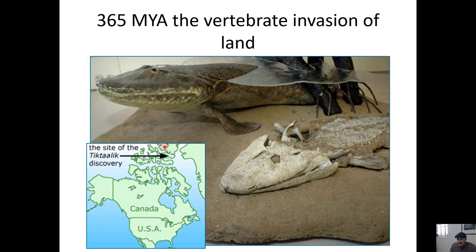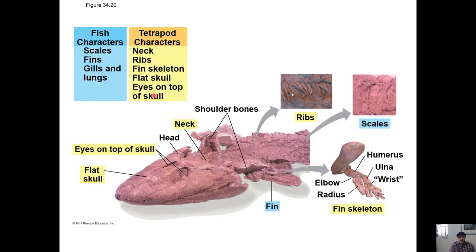365 million years ago, we have the invasion of land by vertebrates. This is Tiktaalik — a skeleton found in northern Canada, with a reconstruction showing lobe fins like a lobe-finned fish, nostrils for breathing air, and a head more like a crocodile, suggesting it was somewhat amphibious. This is a remarkable fossil: scientists predicted at what time frame and in what kind of rocks this animal should have existed, went to that location, and actually found it.